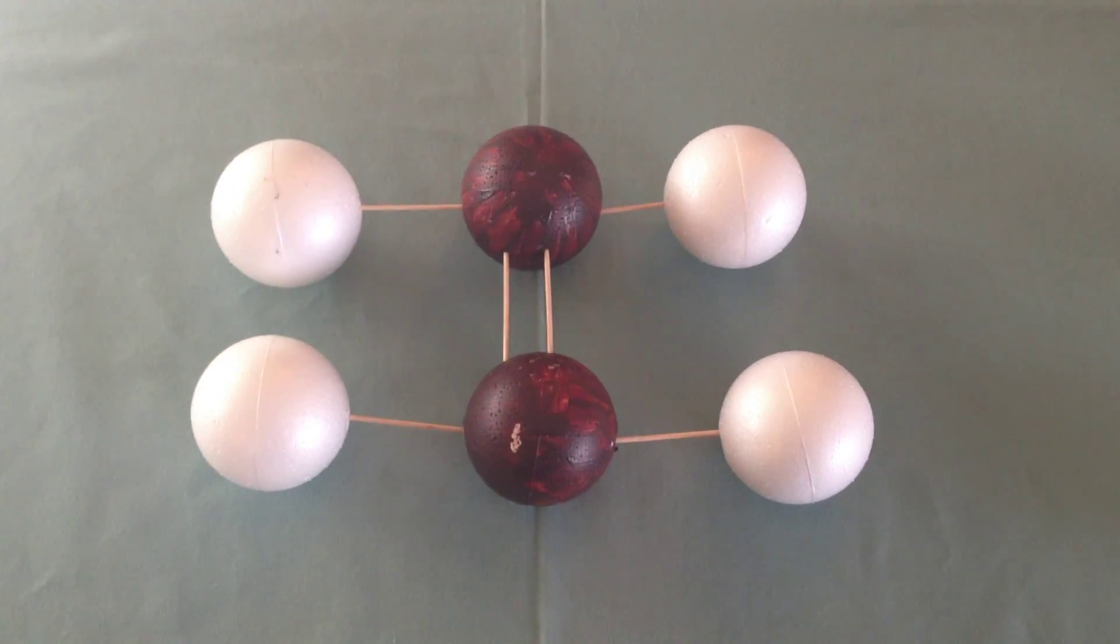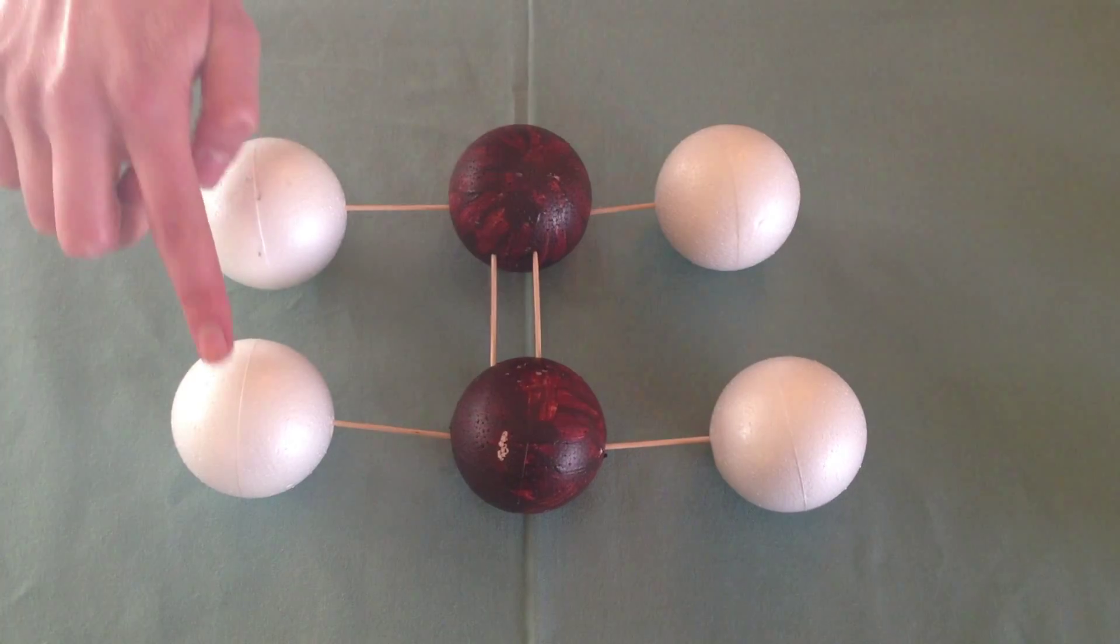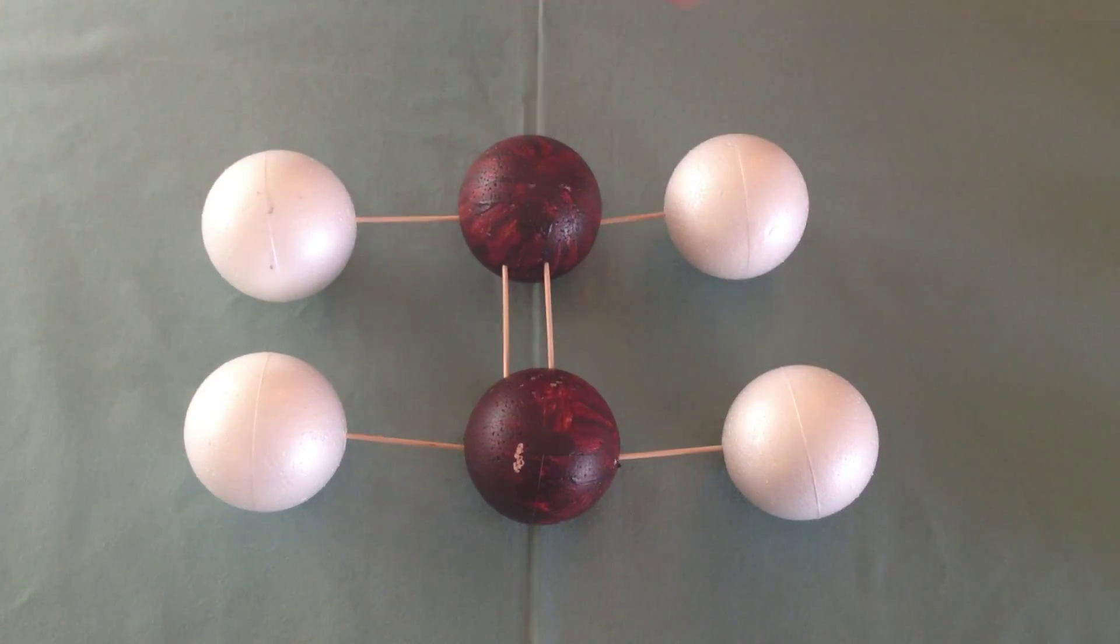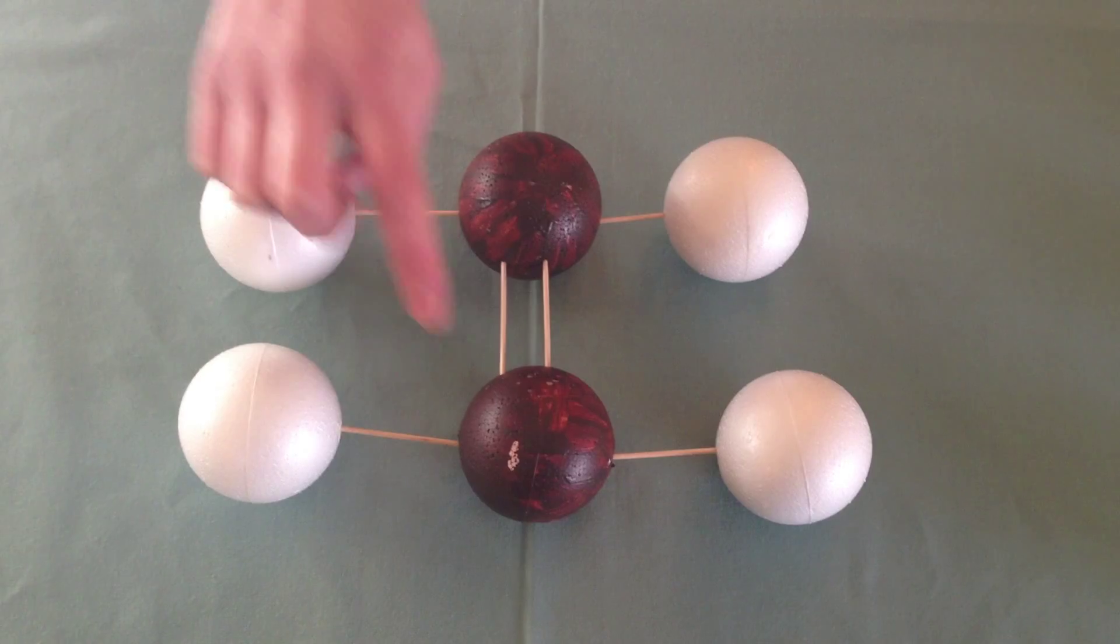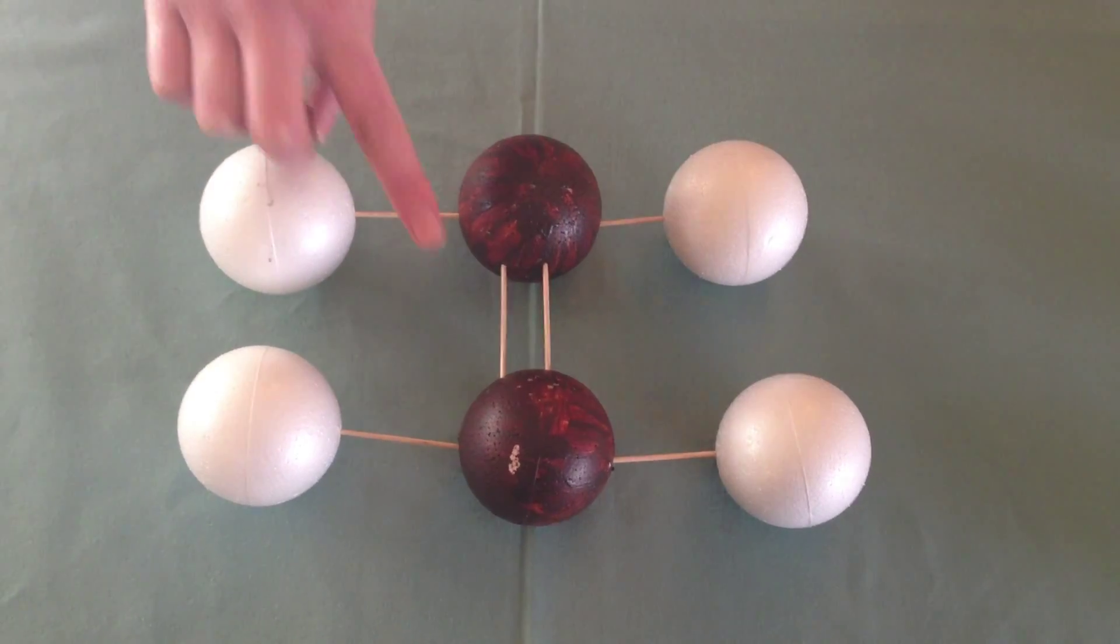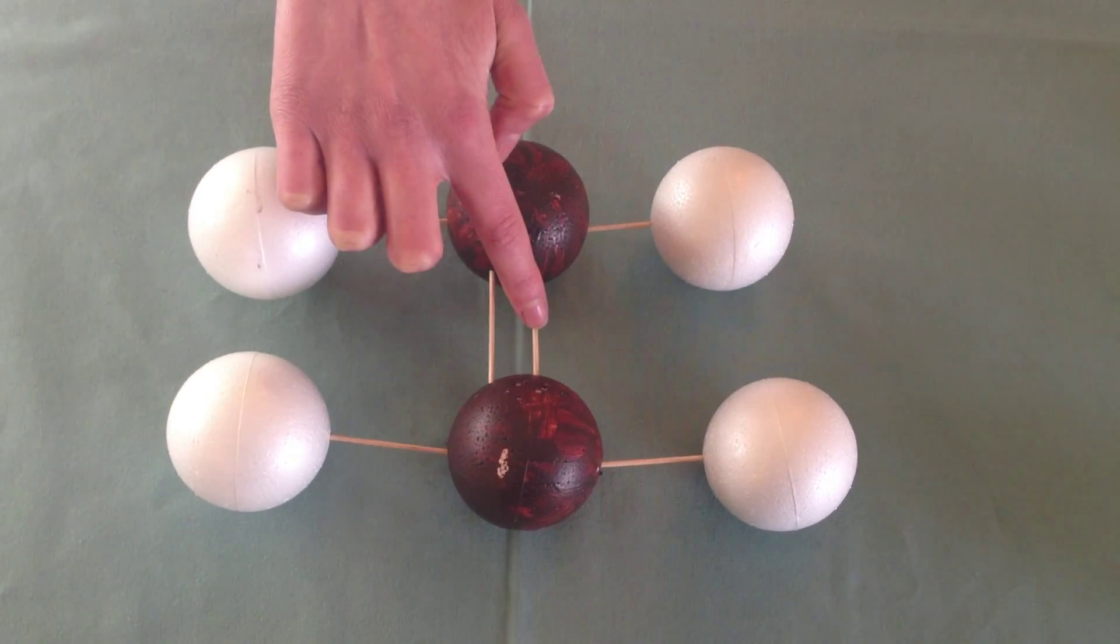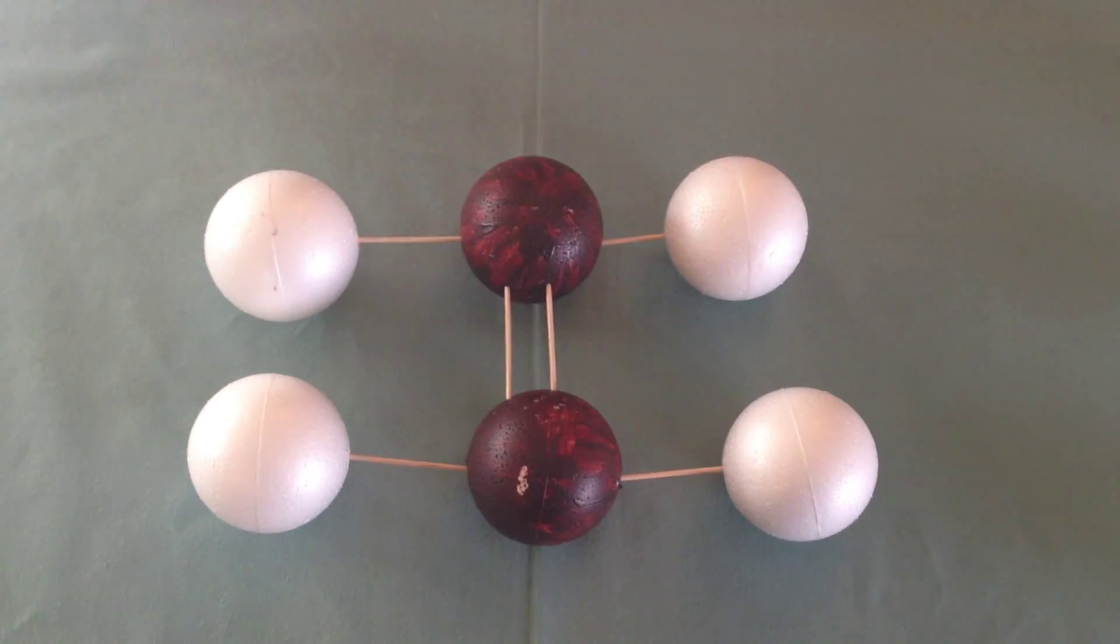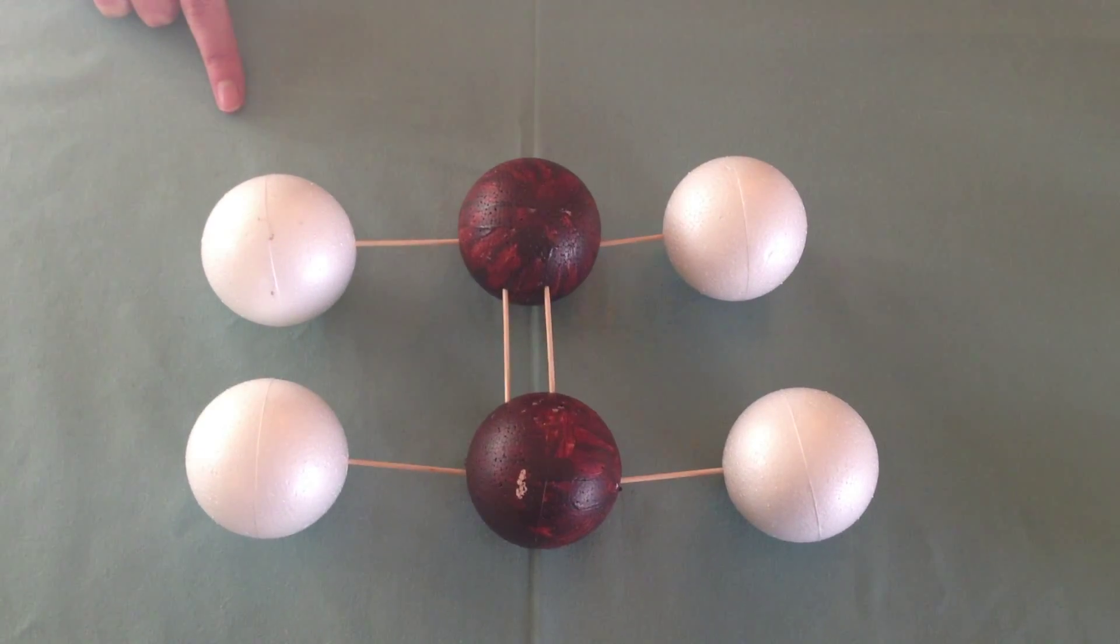This is ethene. It has four hydrogen atoms and two carbon atoms joined together with a double covalent bond. This molecule is a monomer.